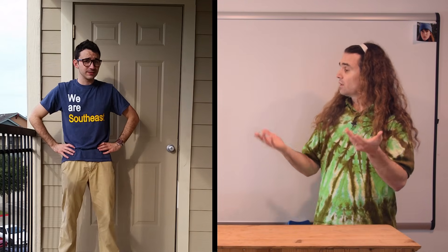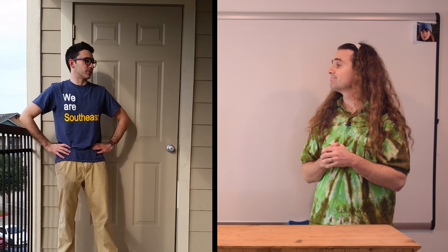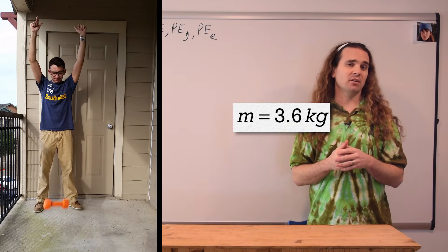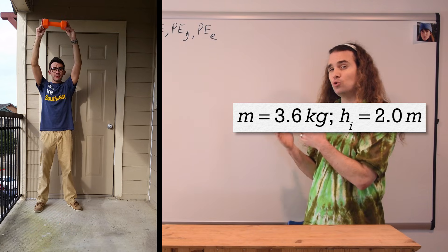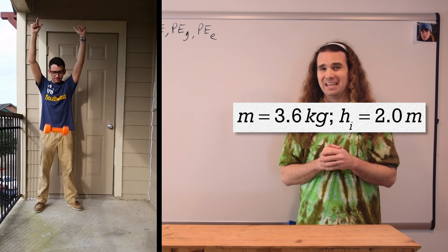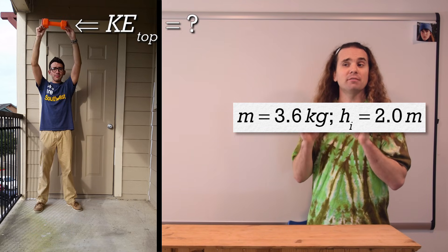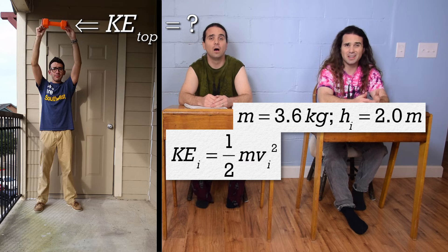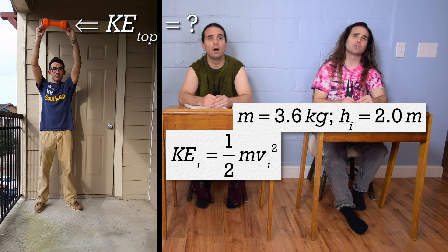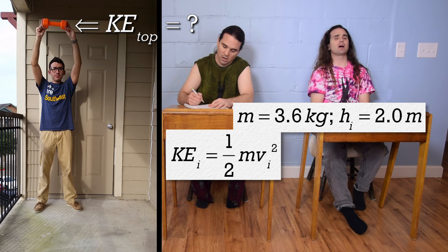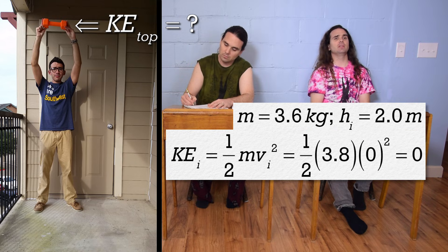And there you have it. Thank you, Mr. Terry. Okay, again, we have a mass of 3.6 kilograms, which we are dropping from a height of 2.0 meters. Initially, at the very top, what is the kinetic energy of the mass? Well, kinetic energy, or the energy of motion, is equal to one half times the mass of the object times the square of the object's velocity. So, because the mass has an initial velocity of zero, the initial kinetic energy of the mass is zero.